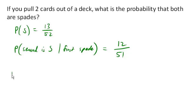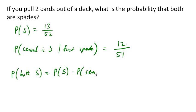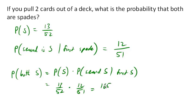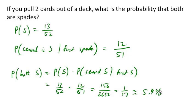To find the probability that both are spades, we use the conditional probability version of the multiplication rule: the probability of the first event times the probability of the second event given that the first happened. So 13/52 for the first spade times 12/51 for the second spade gives a probability of 156 out of 2652, or 1 out of 17, or about 5.9% probability of getting two spades when drawing two cards.